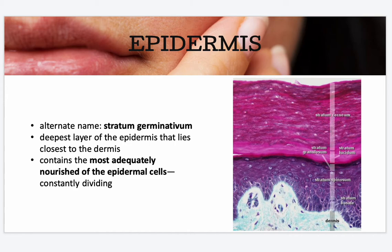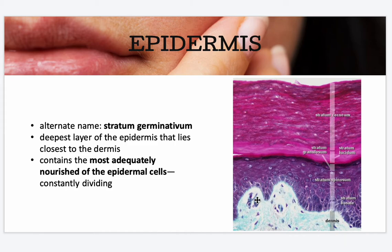We also have the stratum germinativum, which is the alternate name for stratum basale. This is the deepest layer of the epidermis that lies closest to the dermis, and it contains the most adequately nourished epidermal cells. They are constantly dividing to produce new cells.